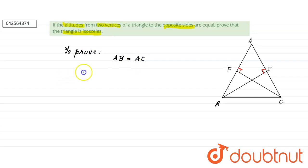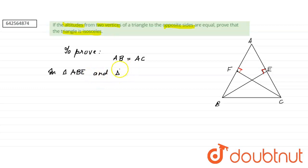Now, to prove that AB equals AC, we'll prove that two triangles are congruent. The two triangles we consider are triangle ABE and triangle ACF.